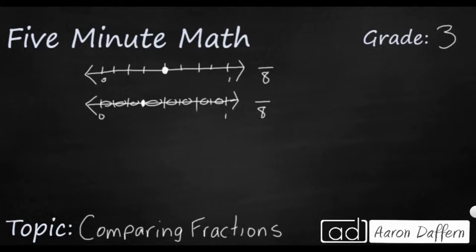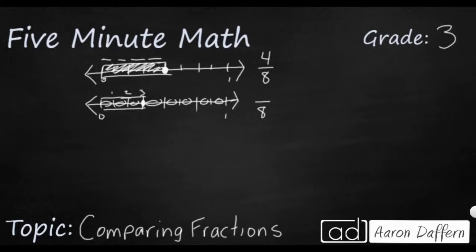This dot on the top, if you start from the left and move to the right, it's one, two, three, four little tick marks over. So this fraction right here represents four eighths. This bottom fraction right here is only three tick marks over — one, two, three — so it's three eighths.